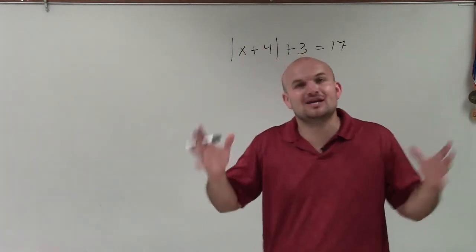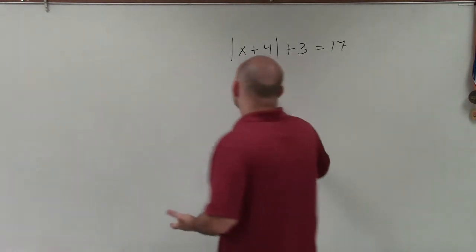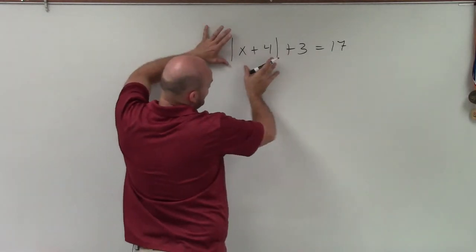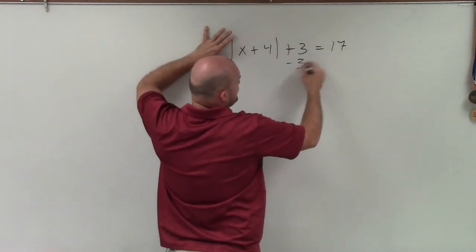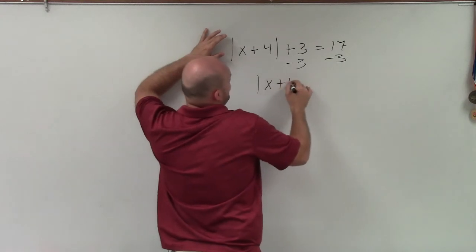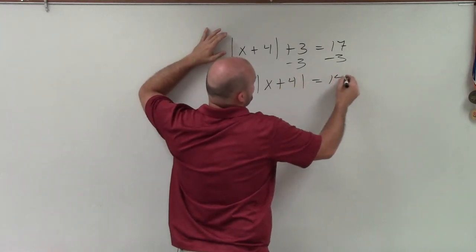Here I have the absolute value, and then I have this plus 3 added. So to isolate this, I'm going to subtract 3 on both sides. Now I have absolute value of x plus 4 equals 14.